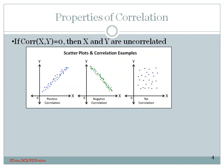By drawing scatter plots between x and y, we can identify different types of correlation. If the scatter plot looks like the first figure, x and y have a positive correlation — when x increases, y also increases. If it looks like the second figure, x and y are negatively correlated — when x increases, y decreases. If there is no correlation at all, the scatter plot looks like the third figure, showing no pattern.